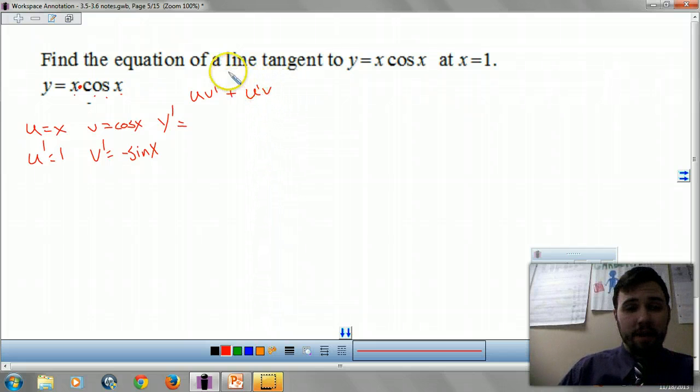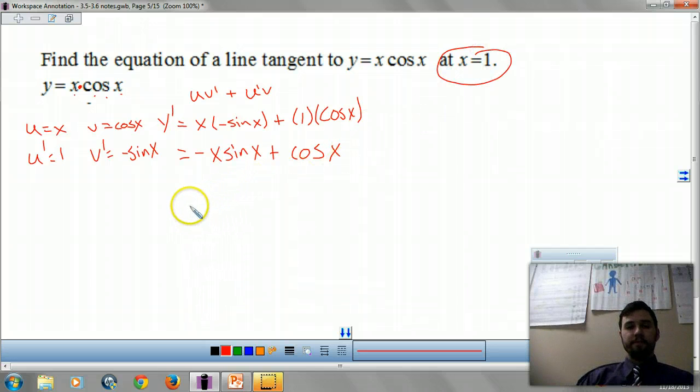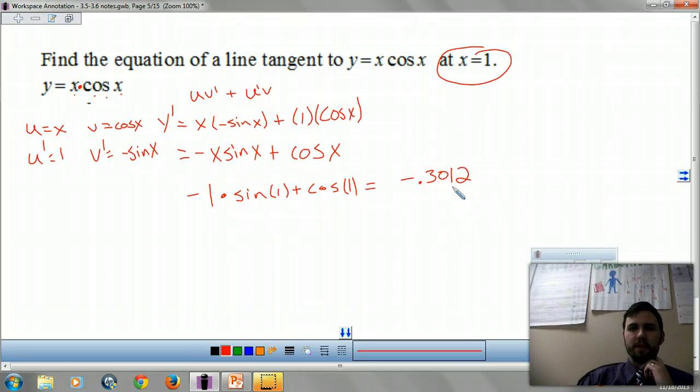So my x is my u times my v prime plus my u prime, which is 1, times my v, which is cosine of x. So I get negative x sine of x plus cosine of x. So now I take this x equals 1 and I plug it in for x to get my slope. So I get negative 1 times sine of 1 plus cosine of 1. And when I plug that in, I get negative point, radians please, negative 0.3012. So that's my slope.